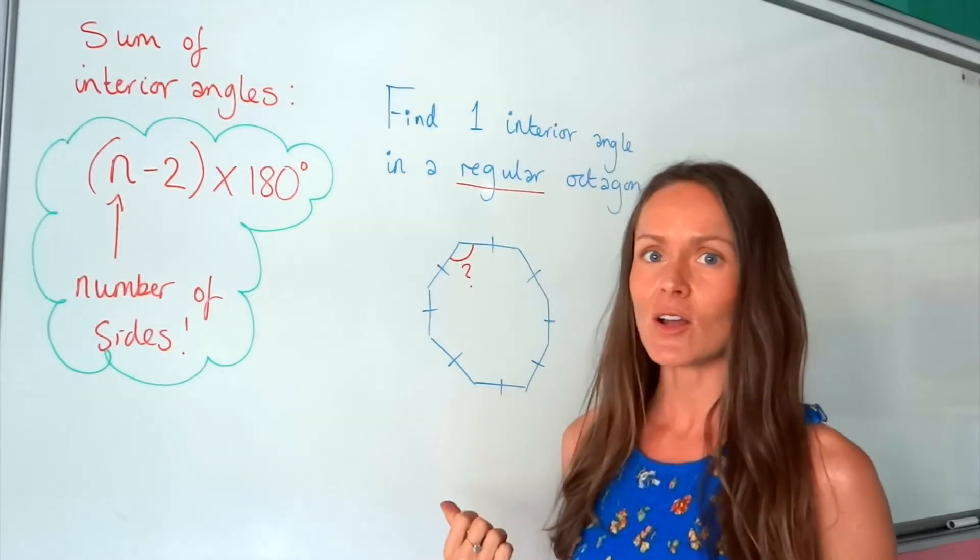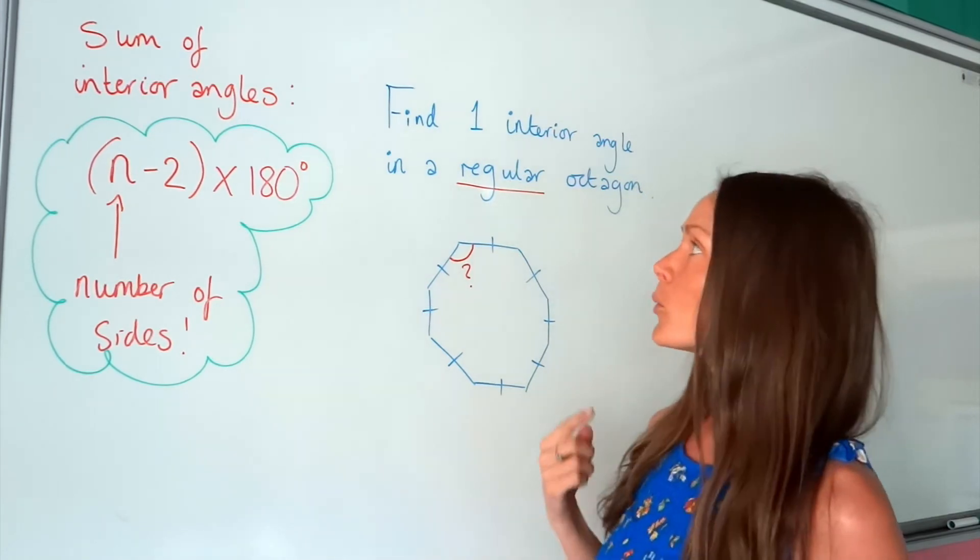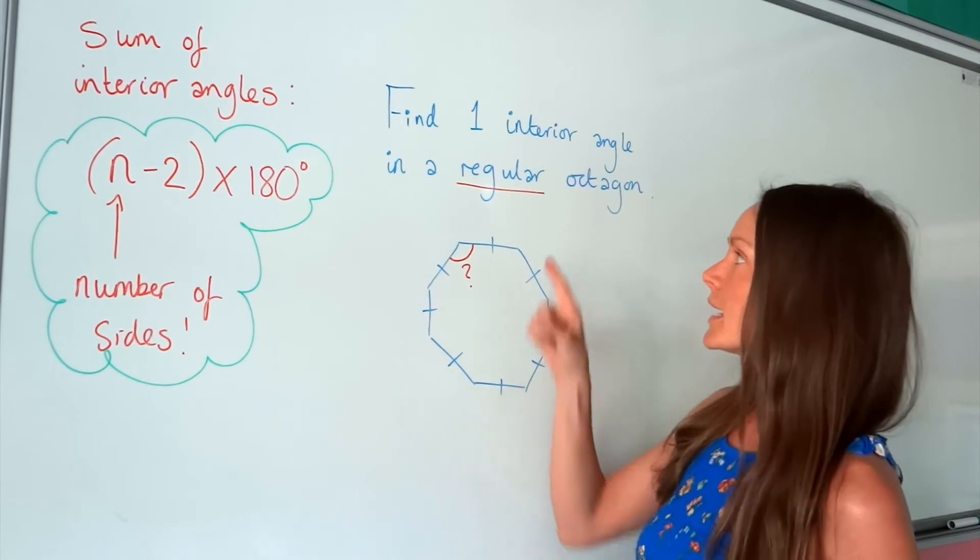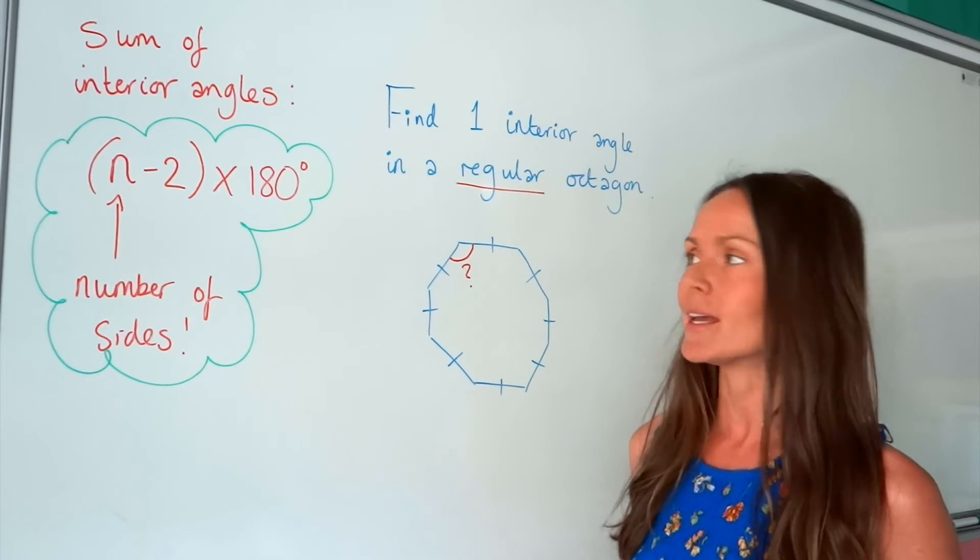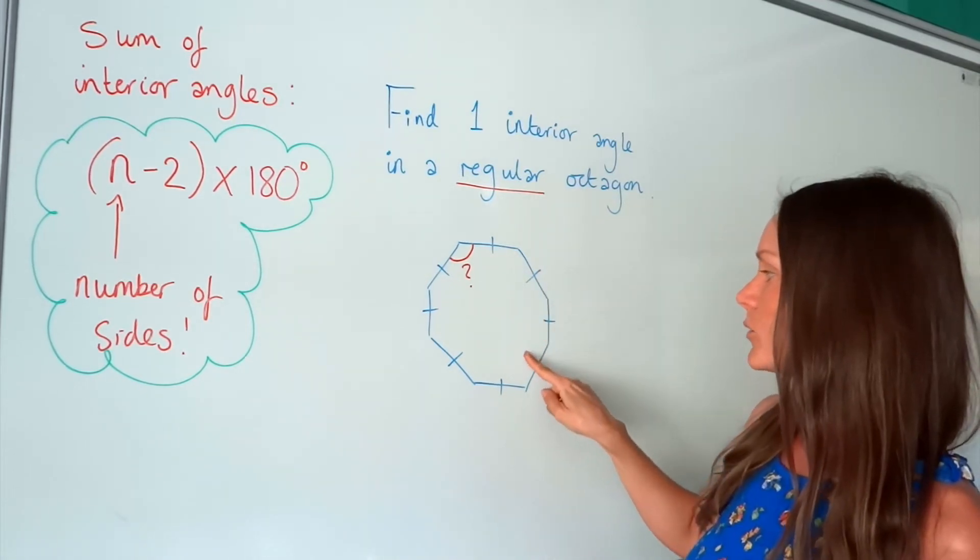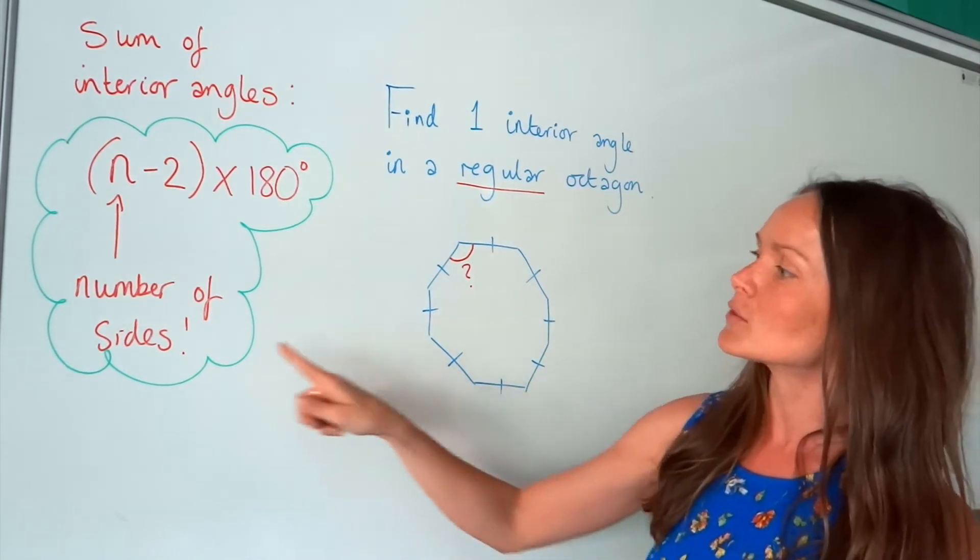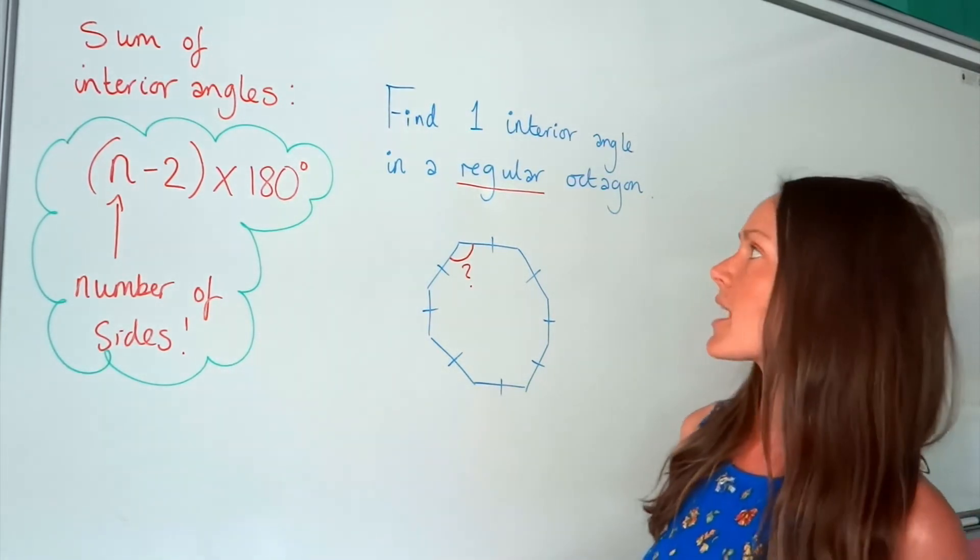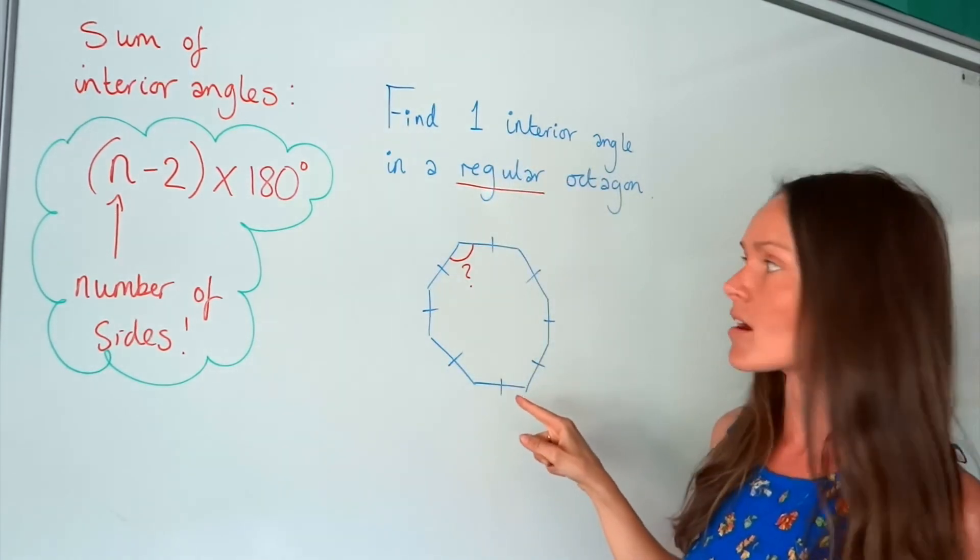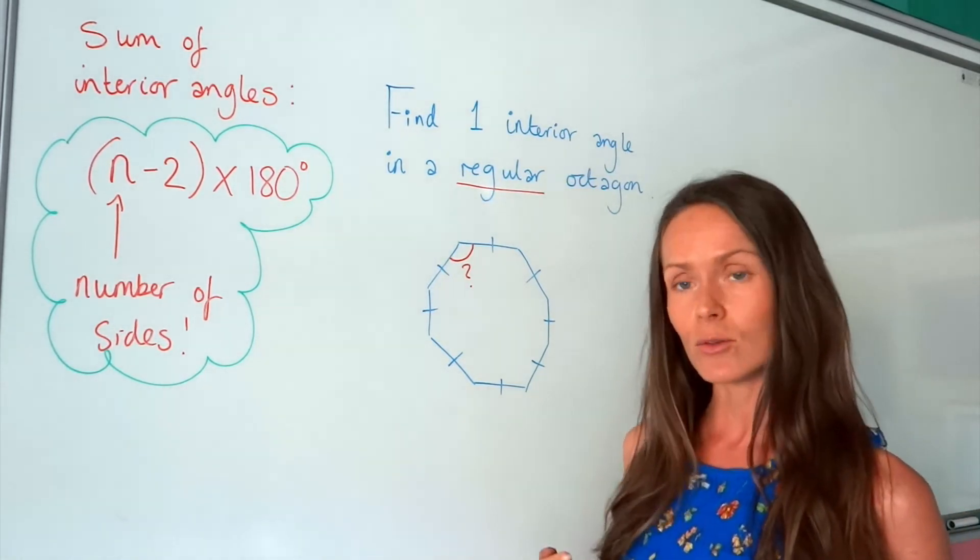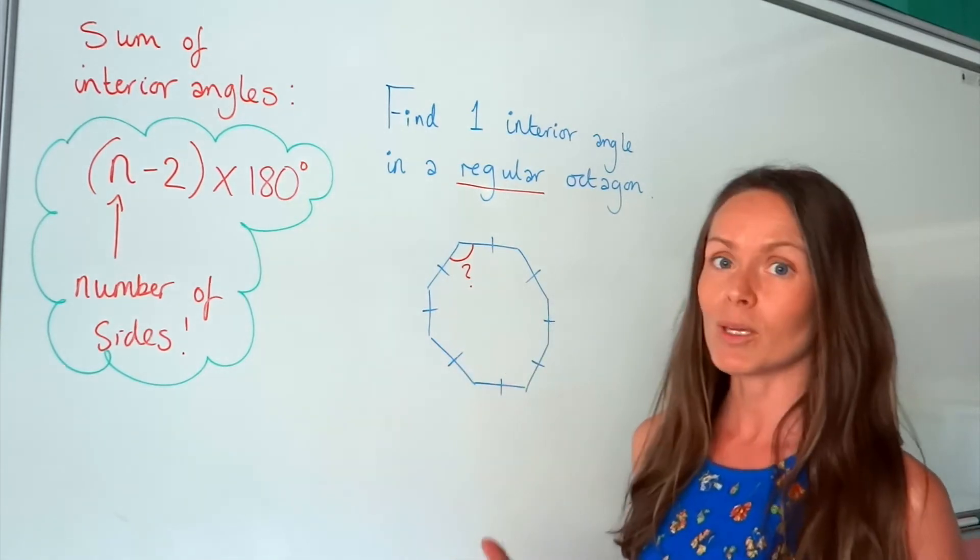In this second example, it's a little bit different, because it doesn't ask for the sum of interior angles. We only want to find one interior angle in a regular octagon. So regular just means all the sides are equal in length. That's why I've just done the little dashes there on the lines, just to show that this is a regular octagon. And it doesn't matter that this formula is for the sum of interior angles, and we only need to work out one. Because if this has eight equal sides, it also has eight equal angles. So all of these angles, the interior angles inside this octagon, will be the same.